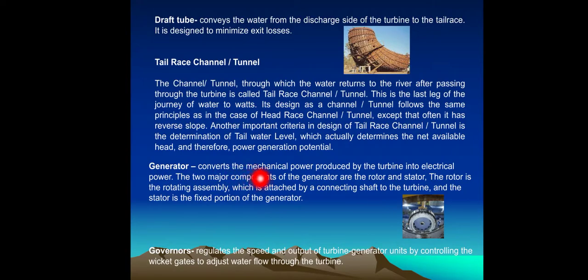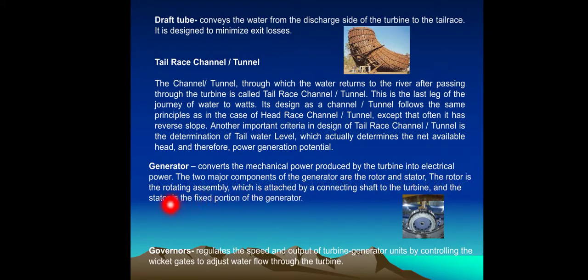Generator: The generator converts the mechanical power produced by the turbine into electrical power. The two major components of the generator are the rotor and the stator. The rotor is the rotating assembly, which is attached by the connecting shaft to the turbine, and the stator is the fixed portion of the generator.